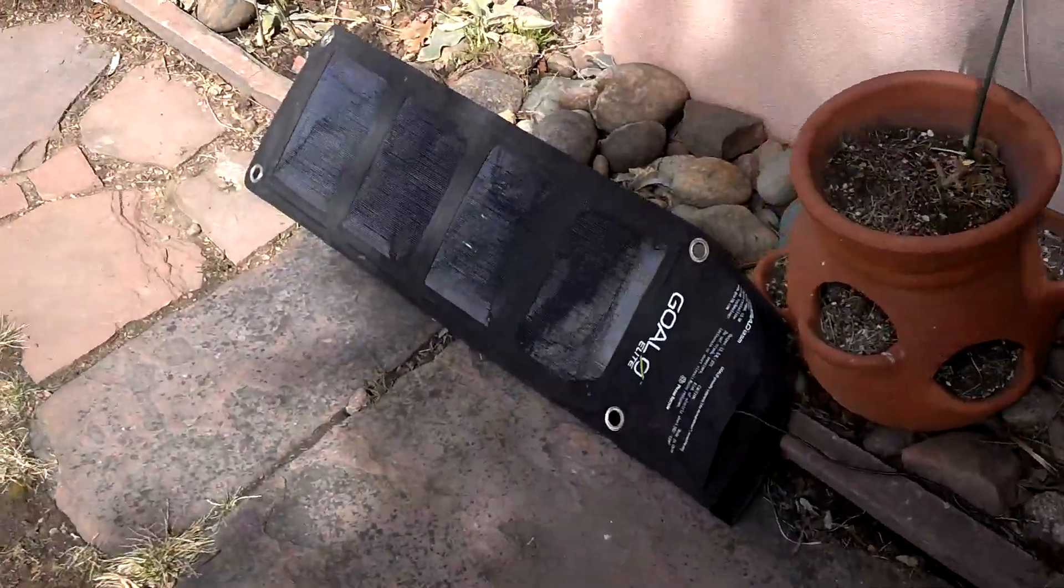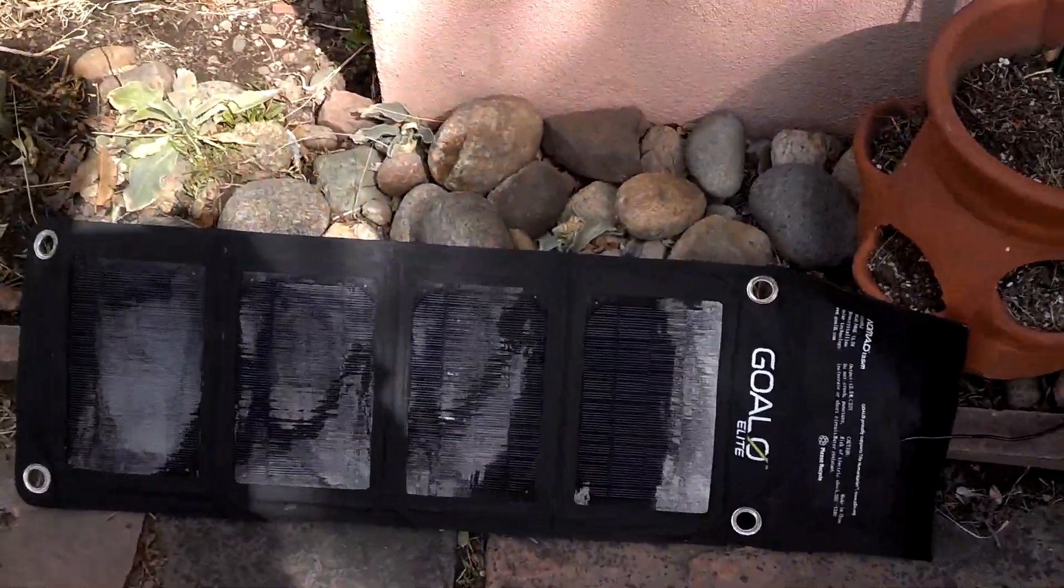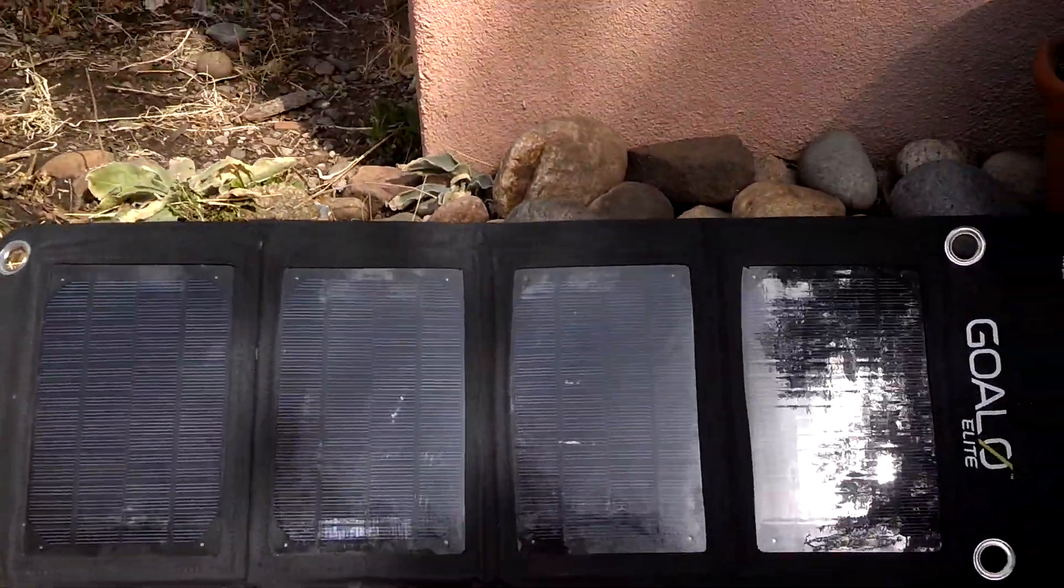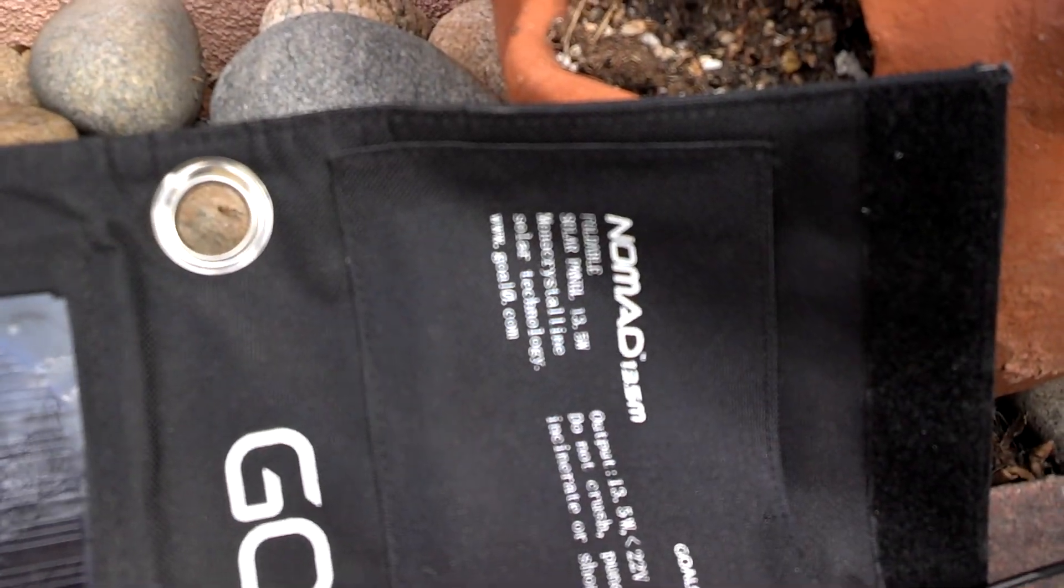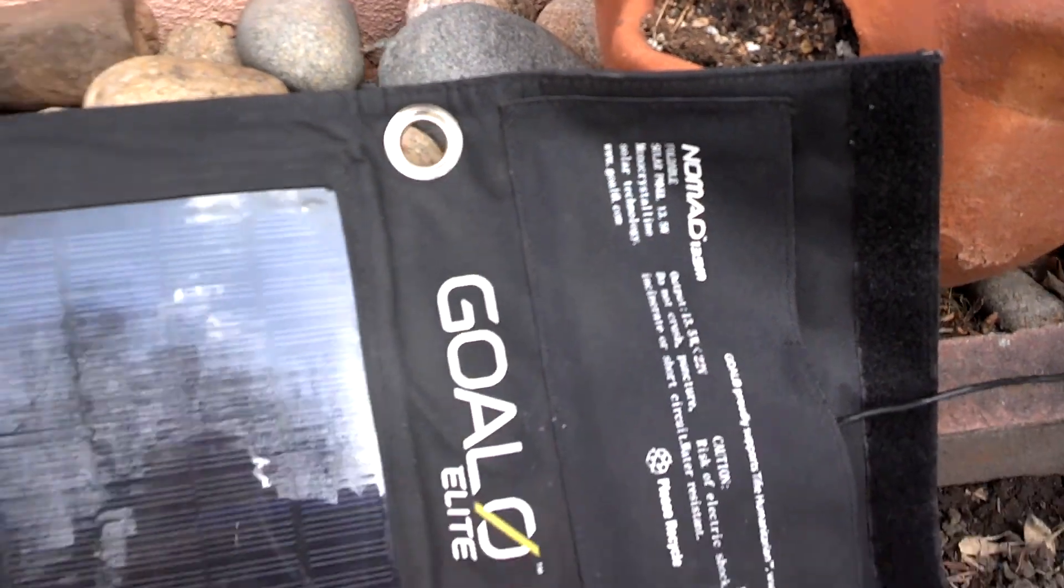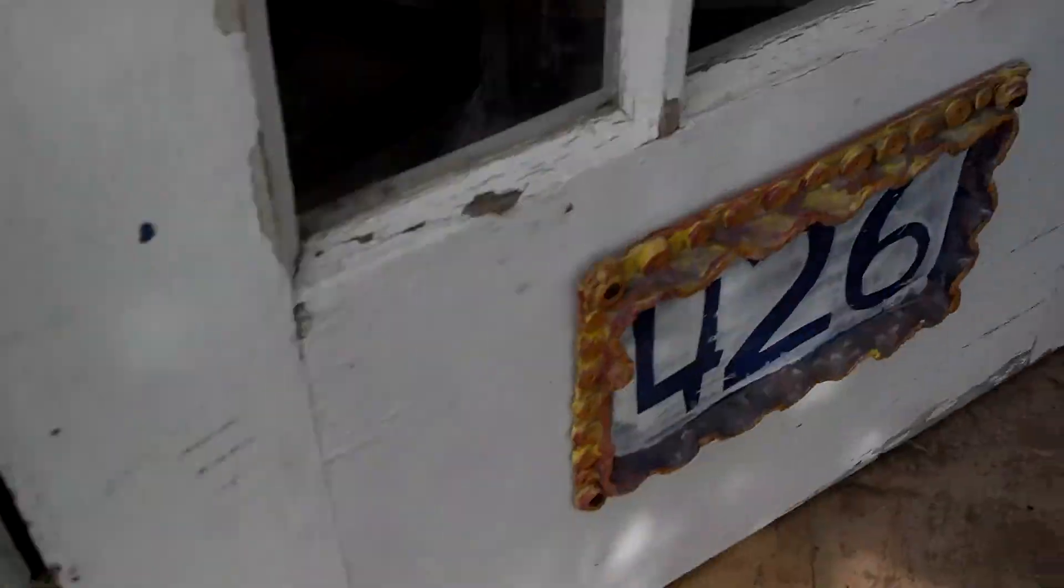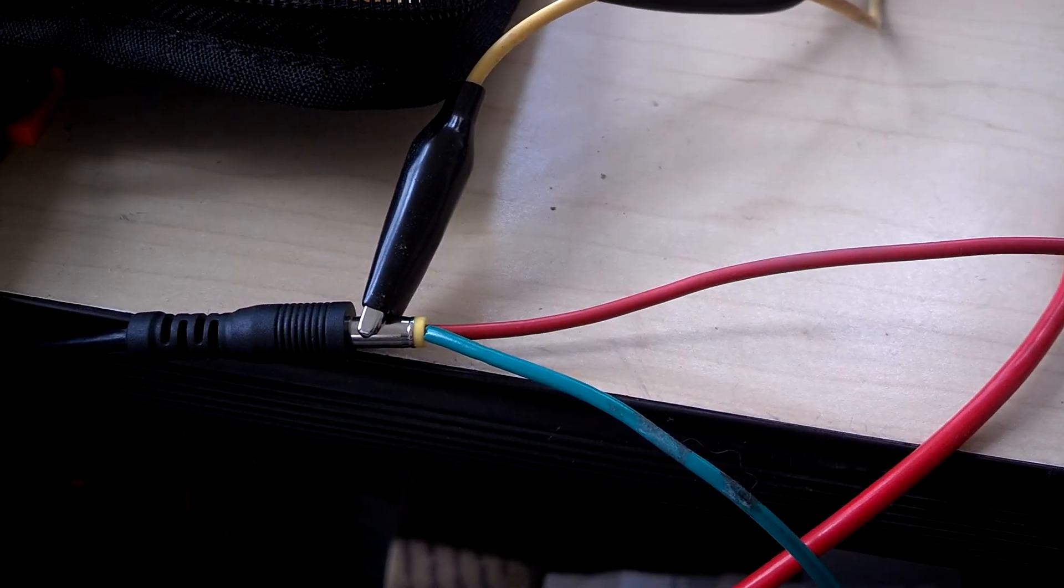But I found that using my simple Goal Zero solar panel, and this certainly isn't a plug for them, I have mixed feelings about the Goal Zero products, but using this 13 watt, 13 and a half watt Nomad. Output voltage is about 20, running under the door.